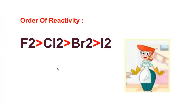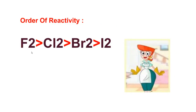Now students, the order of reactivity of this group is in descending order — it decreases down the group. The electronegativity also decreases down the group. Fluorine is the smallest molecule and has high reactivity because of its very high charge density. So the order is: fluorine, then chlorine, then bromine, and then iodine — reactivity in descending order.